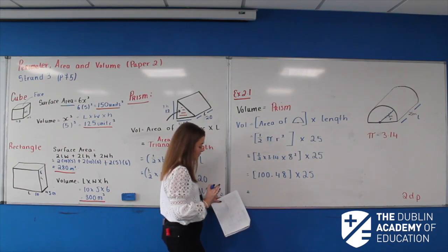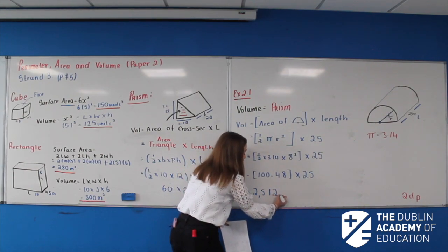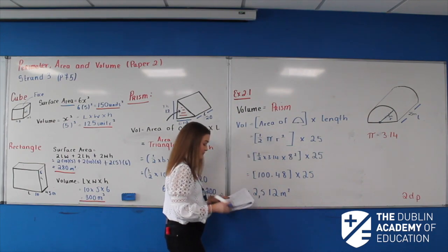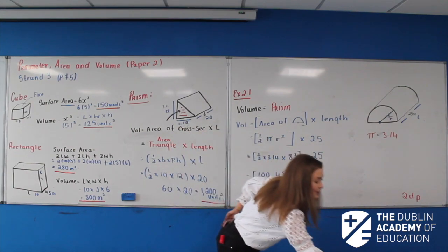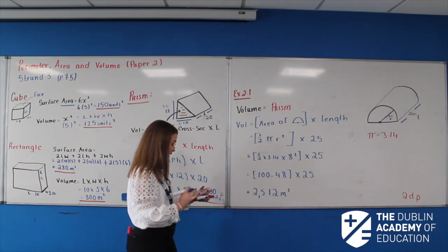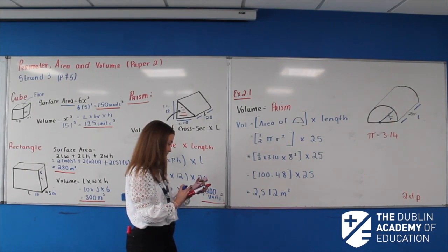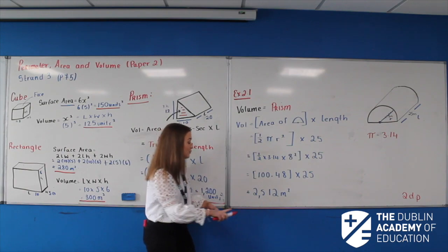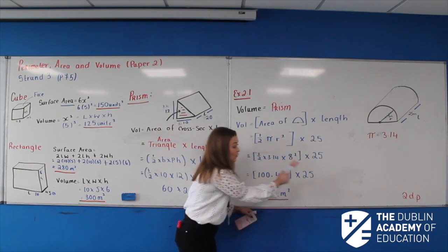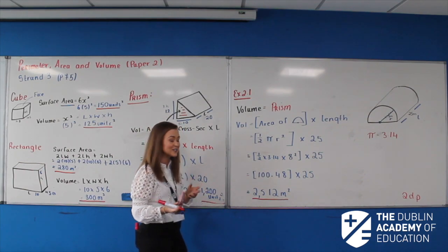Multiplying the semicircle area of 100.48 by the length of 25 gives 2,512 metres squared. I just double-checked that in the calculator — it came out as a whole number, so it rounded itself up rather than going to two decimal places, which is why I double-checked.